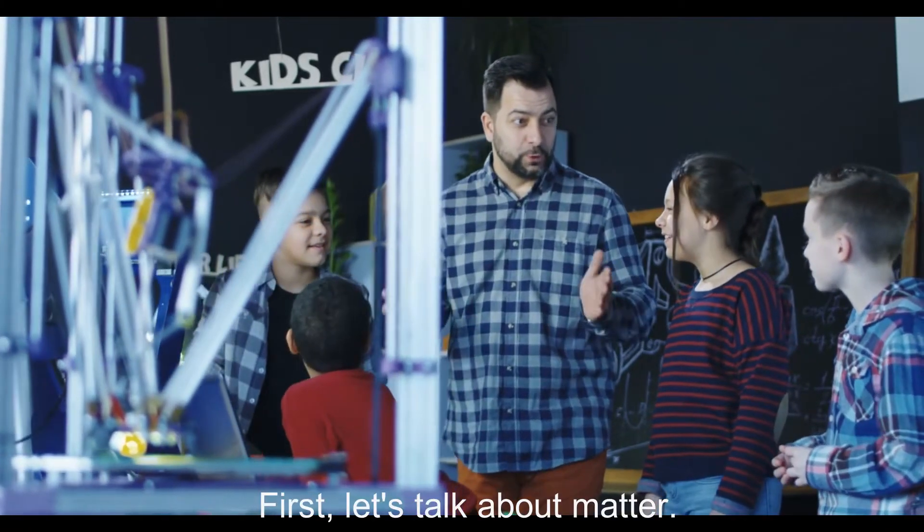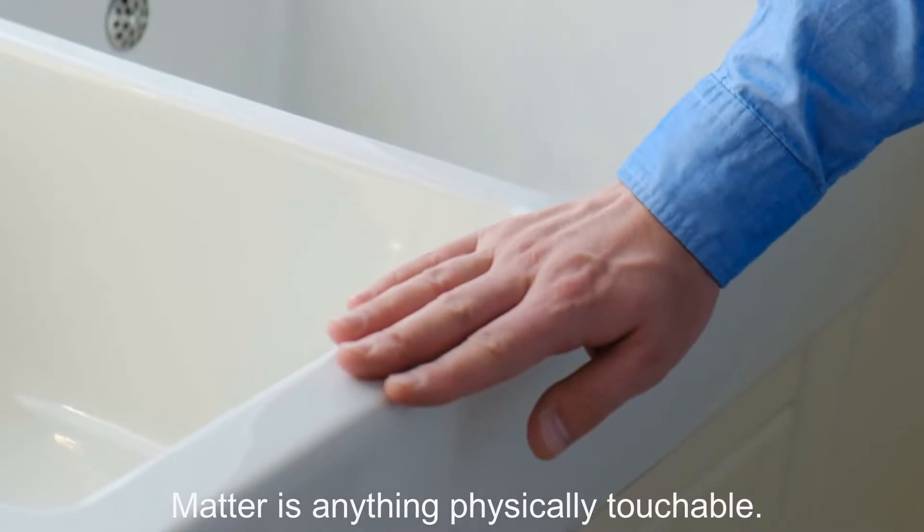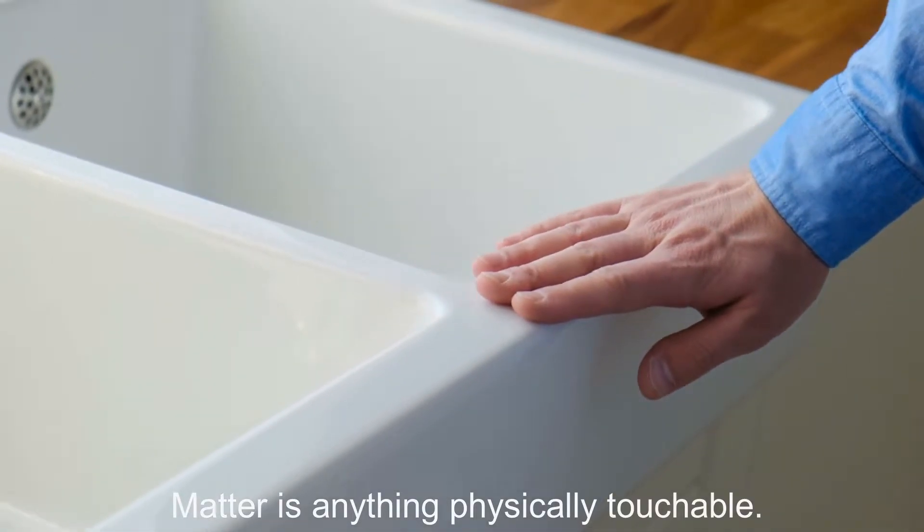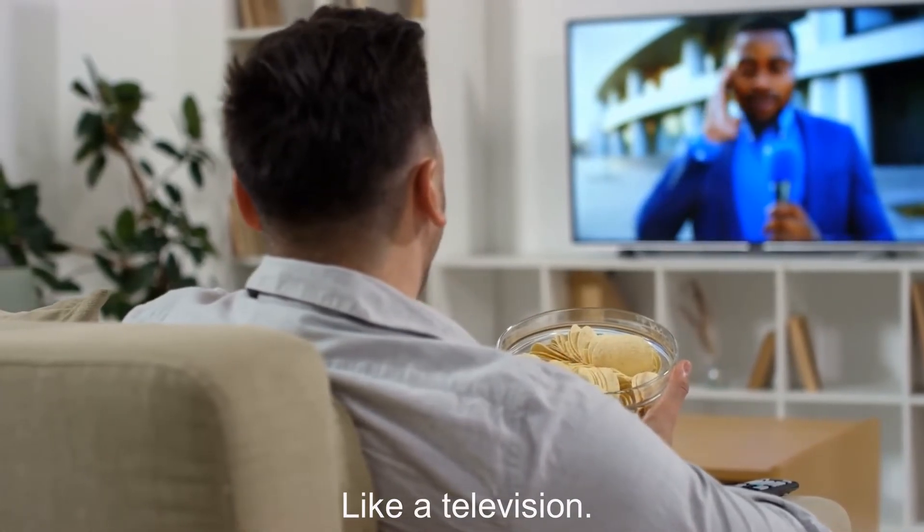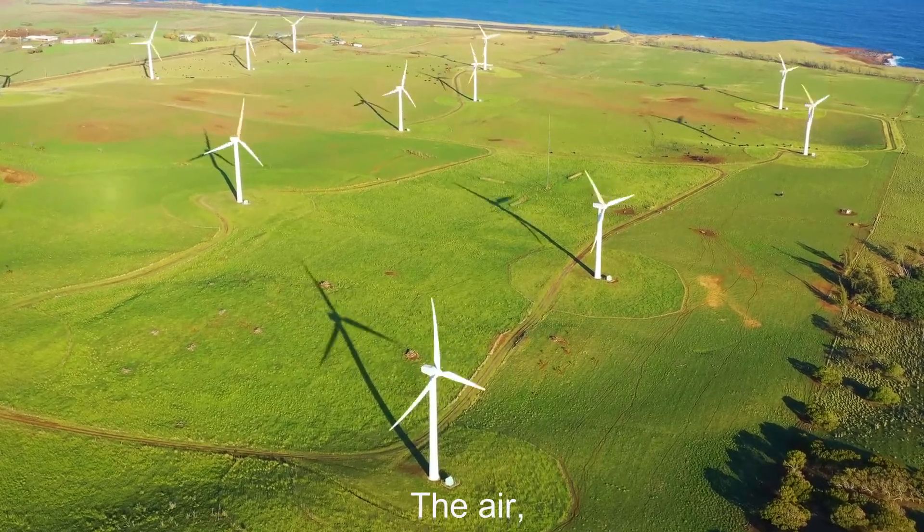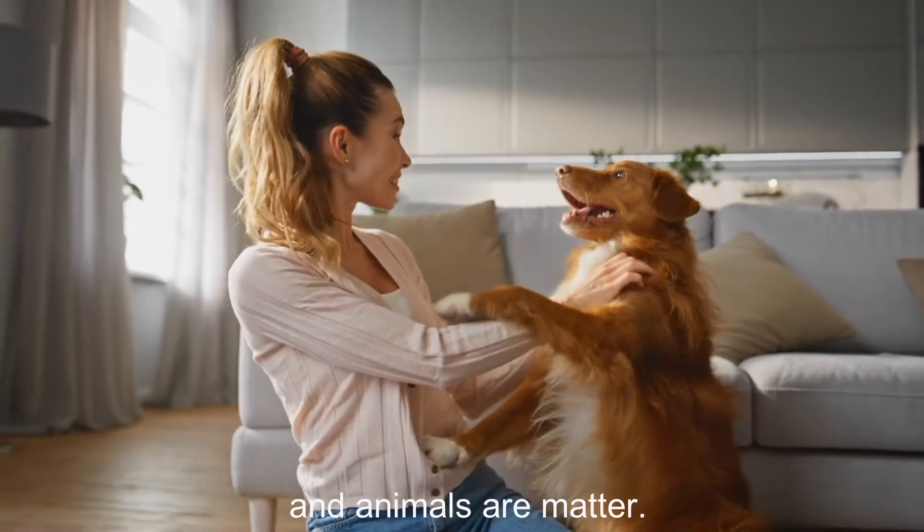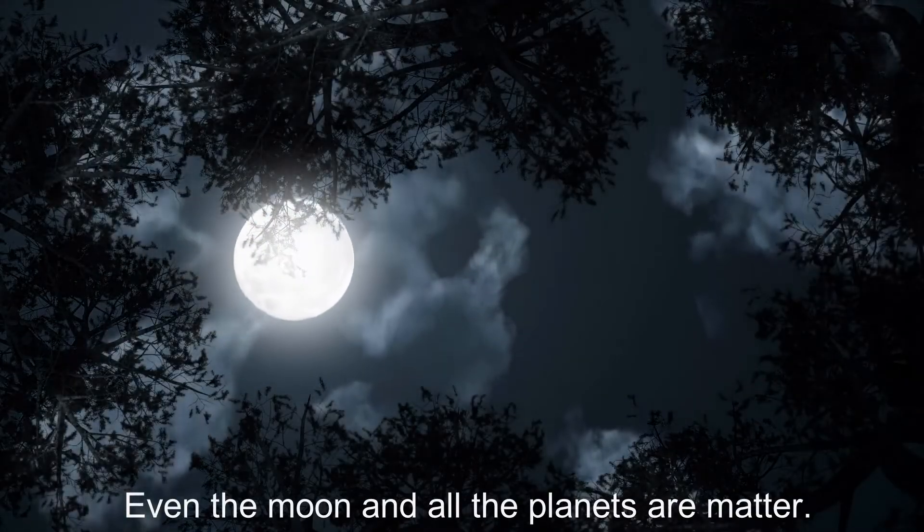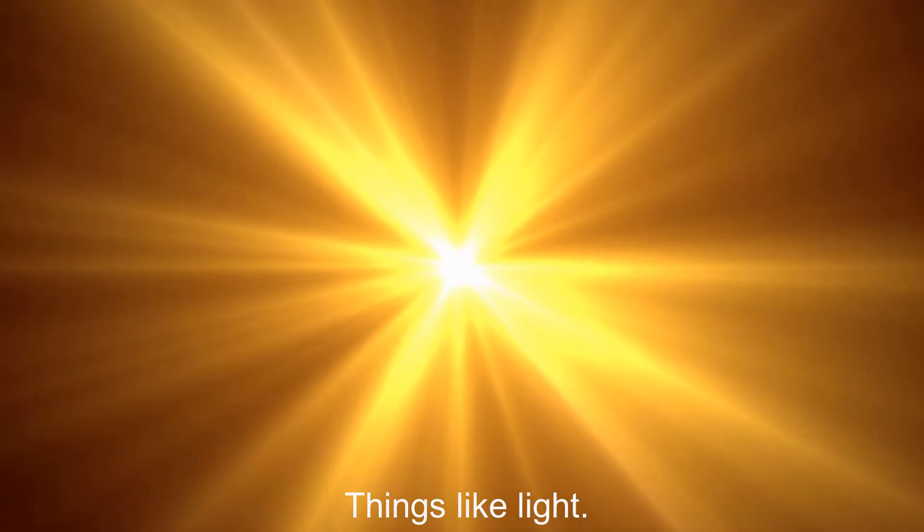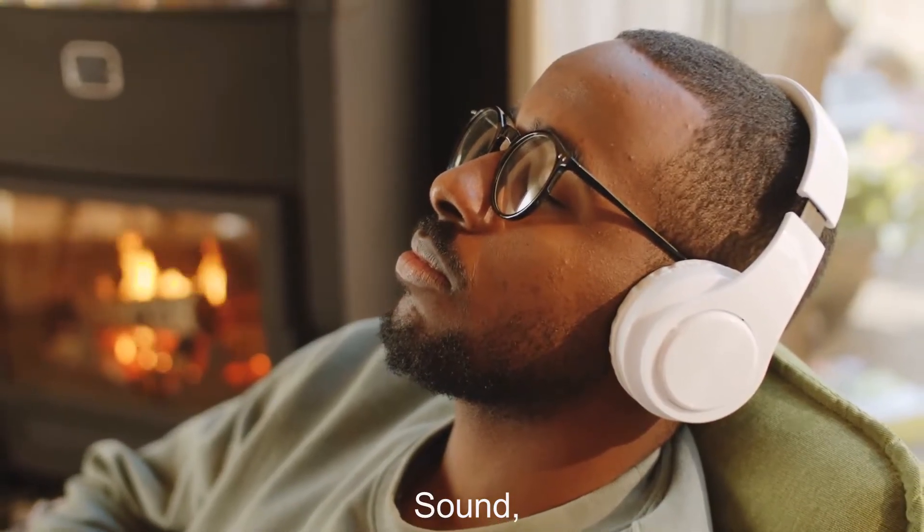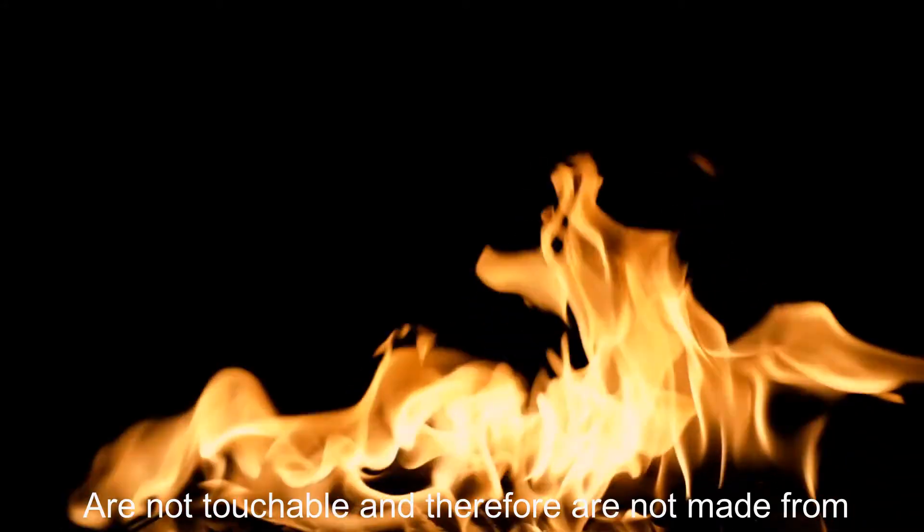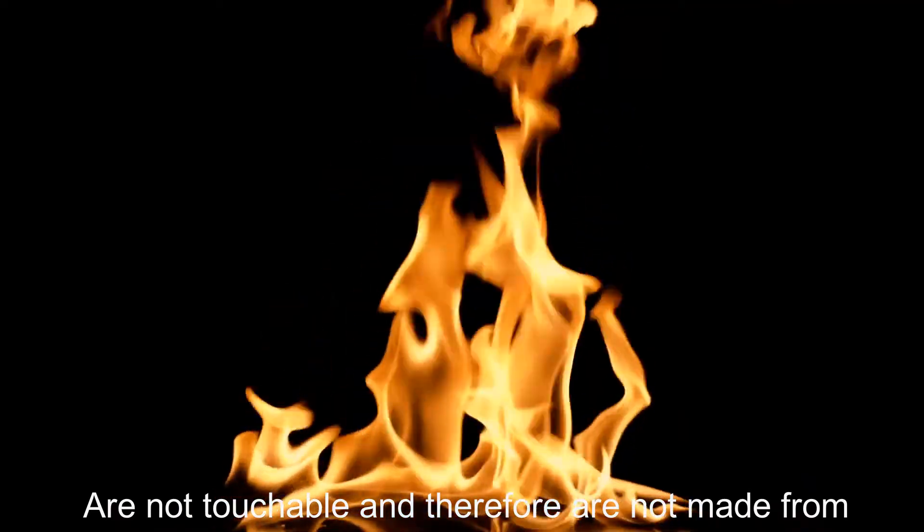First, let's talk about matter. Matter is anything physically touchable. So, things like a television, the air, plants, and animals are matter. Even the moon and all the planets are matter. Things like light, sound, and fire are not touchable and therefore are not made from matter.